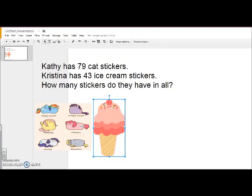First, we will build the concrete model of this problem. We will build 79: seven tens rods and nine ones cubes.